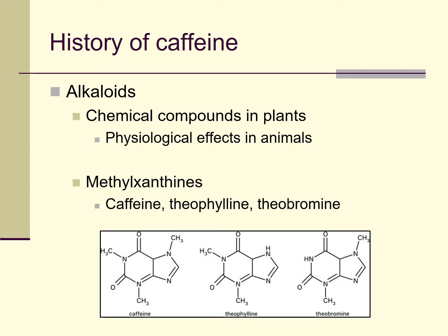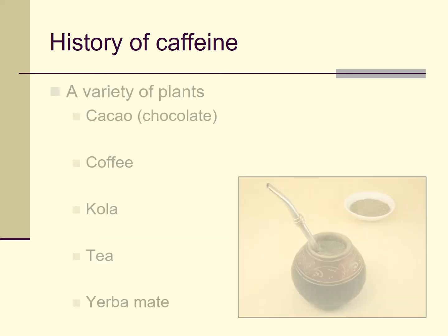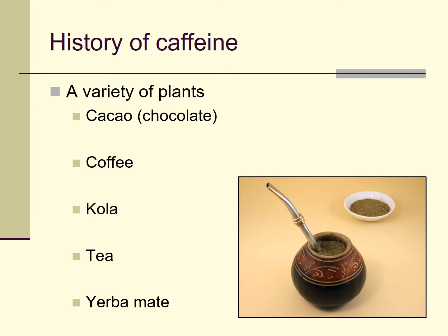Just by glancing at the chemical structures of these different alkaloids, you can see that they're quite similar. Caffeine, theophyllene, and theobromine have similar effects in the body. Caffeine just tends to have stronger effects, at least for the stuff that we're most interested in, so that's what we're focusing on. These methylxanthines occur in a variety of different plants.